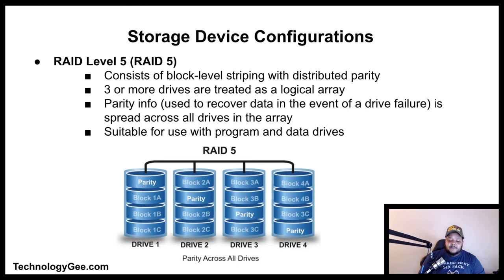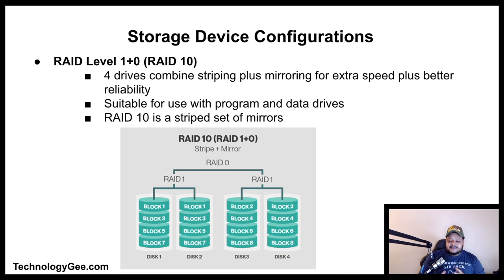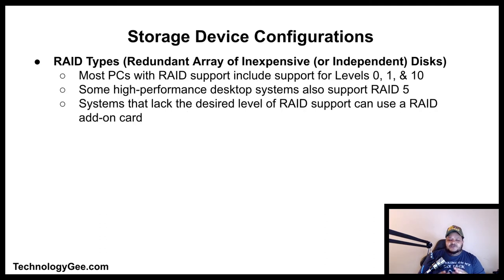RAID Level 5 consists of block-level striping with distributed parity across three or more drives. Parity information is used to recover data in the event of a drive failure and is spread across all drives in the array — suitable for program and data drives. RAID 10 combines four drives using striping plus mirroring for extra speed and better reliability; it is a striped set of mirrors. Most PCs with RAID support include levels 0, 1, and 10; some high-performance desktops also support RAID 5. Systems lacking desired RAID support can use a RAID add-on card.